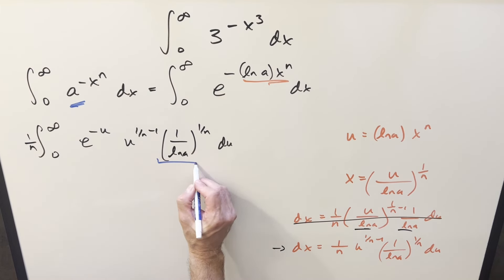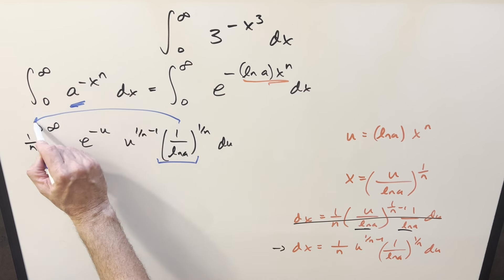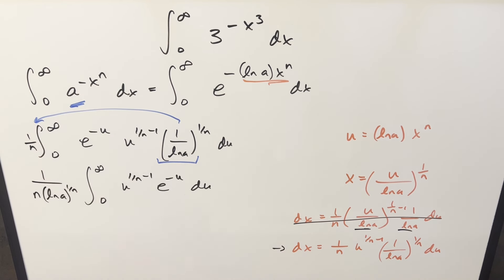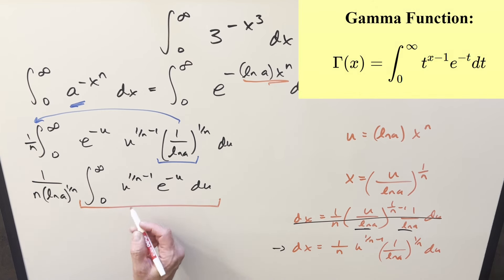But this right here is a constant as well. I probably should have just did this in one step, but let's bring this out front of the integral as a constant as well. And then at this point, what you'll notice is everything we have right here, this is perfectly set up for the gamma function. Our input on this is going to be just this exponent right here. So this whole integral is just going to boil down to just gamma of 1 over n.